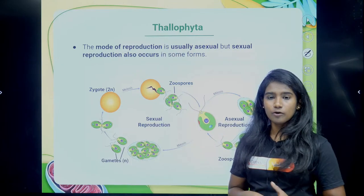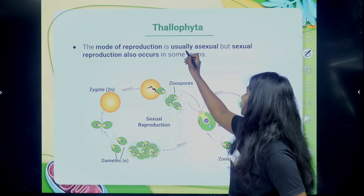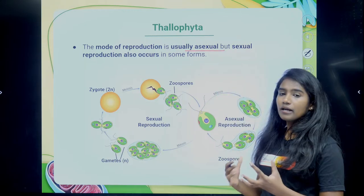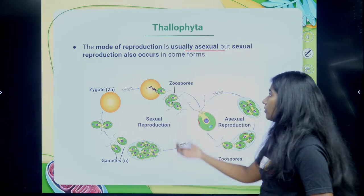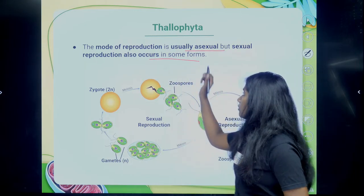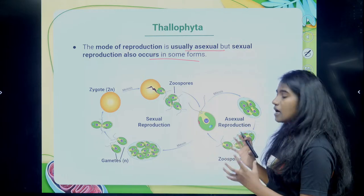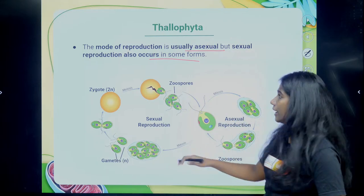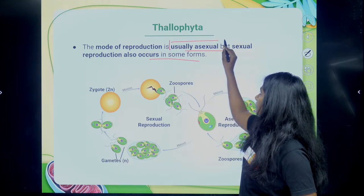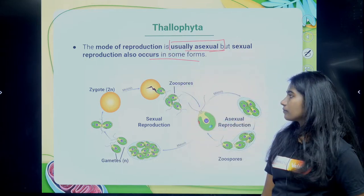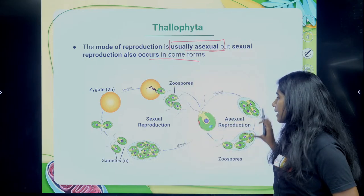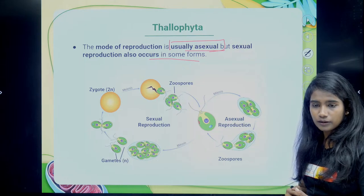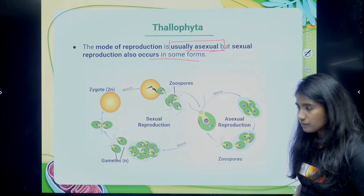How does Thallophyta reproduce? It is usually asexual, but sexual reproduction also occurs in some forms of Thallophyta. Mostly it is asexual reproduction. A life cycle diagram is provided for reference.